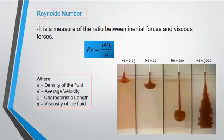To identify what type of flow the fluid behaves is by determining the values of Reynolds number, which is a dimensionless unit and it is a measure of the ratio between the inertial forces and the viscous forces. The formula to determine the Reynolds number is RE equals the density of the fluid multiplied by the average velocity V times the length or characteristic length over the viscosity of the fluid.